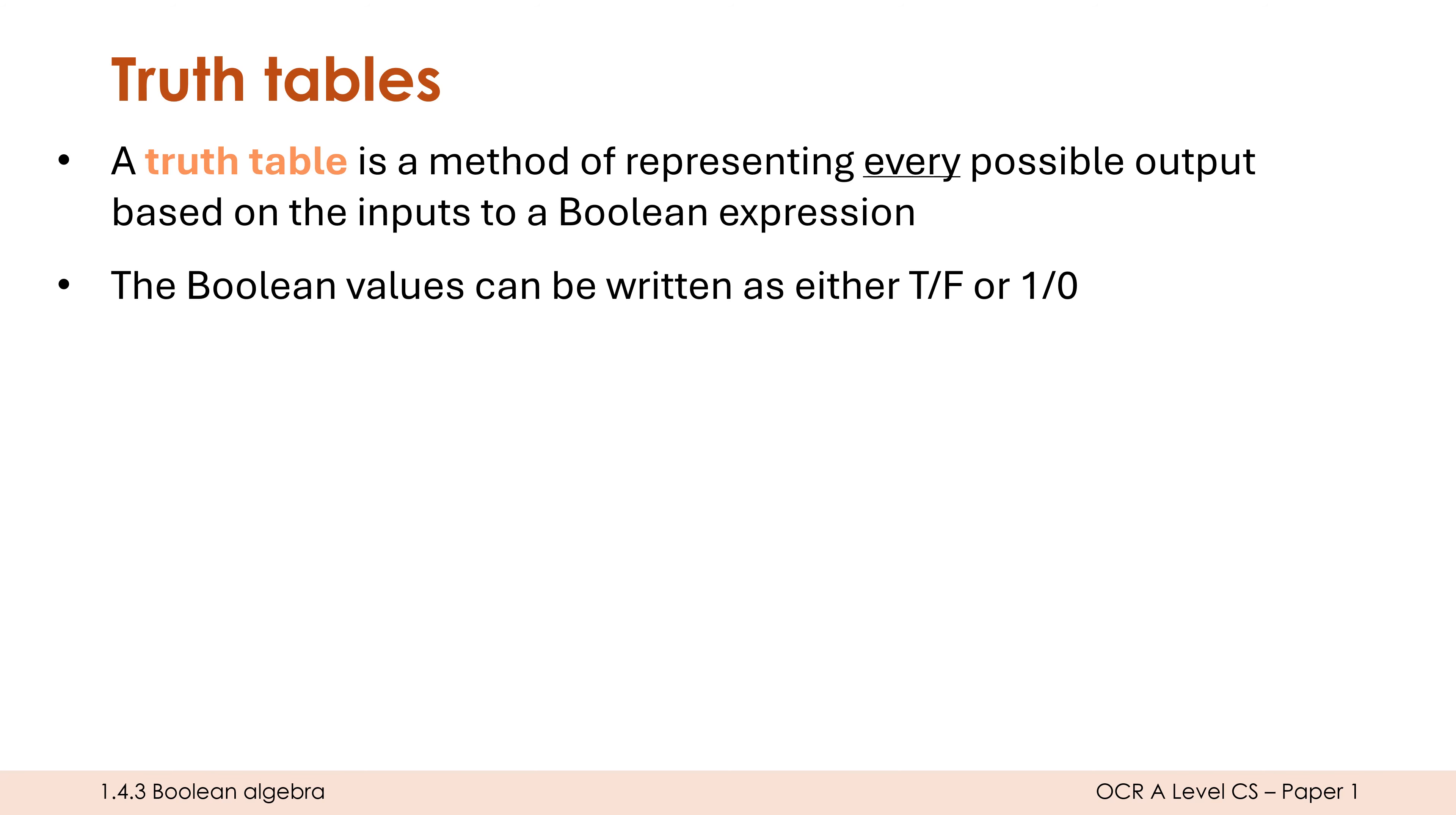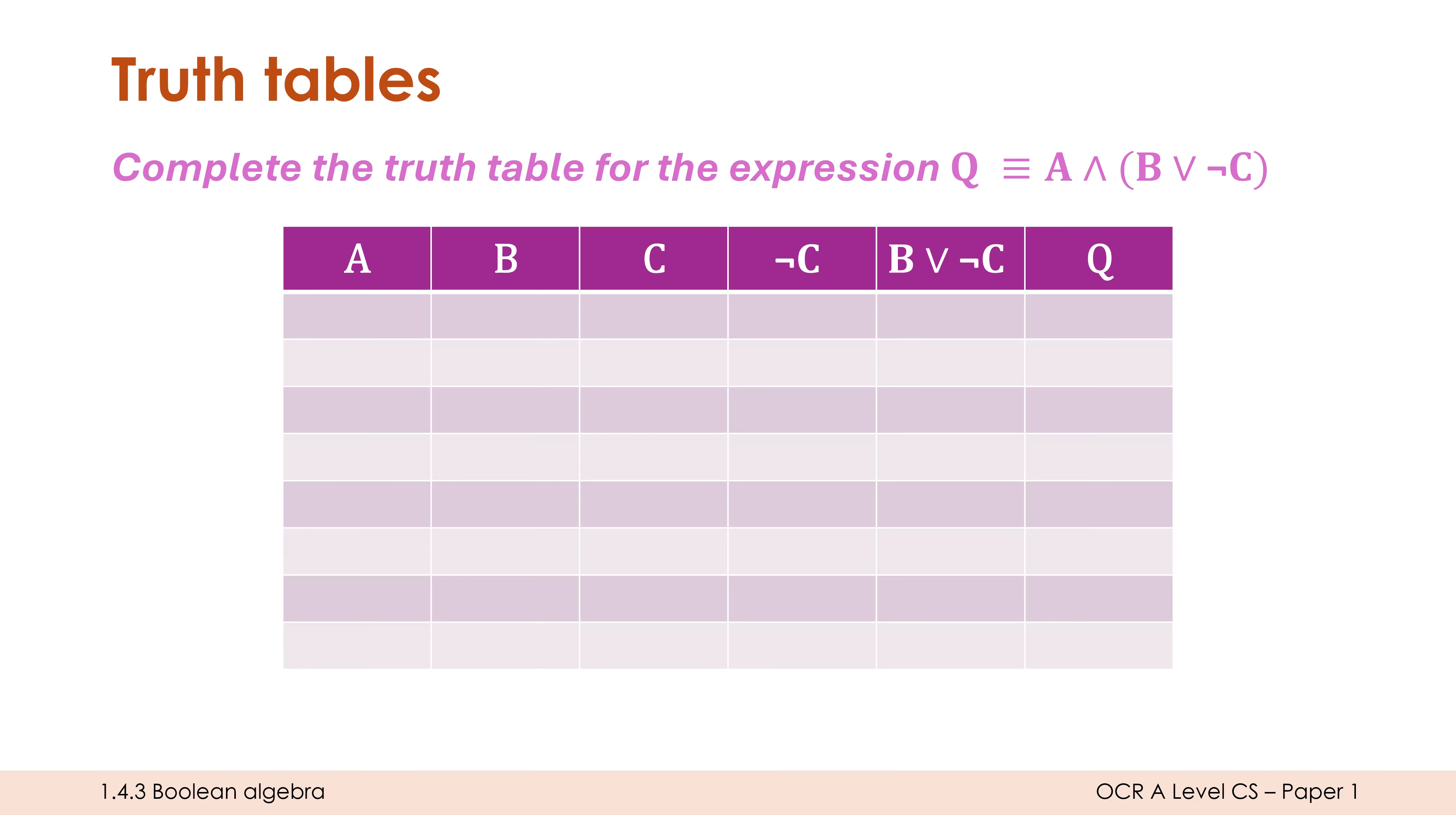So you've looked at hopefully the mini truth tables for AND OR XOR NOT, but you may be asked to complete a truth table for an expression. So an expression is obviously going to be longer than just one of these operations. Here we've got AND, we've got OR and we've got NOT. And typically the examiners will give you an empty truth table to complete. The inputs always go on the left-hand side and the output always goes on the right-hand side.